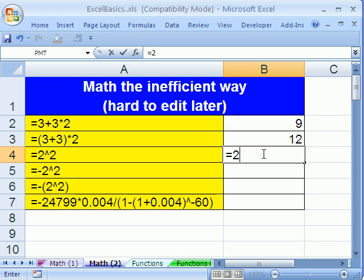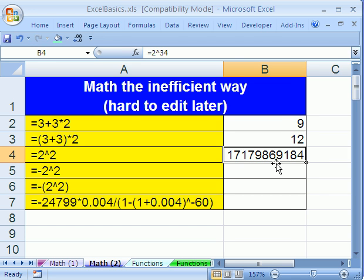Let's go ahead and change this. Equals 2 caret 14. That's how many columns there are in the new 2007 Excel. Let's try equals 2 caret 20. That's how many rows there are in the new Excel. Equals 2 caret 34. 17 billion, that's how many cells there are in Excel.